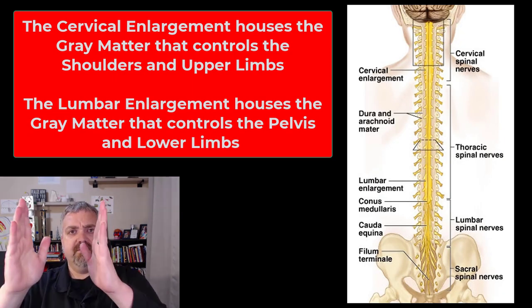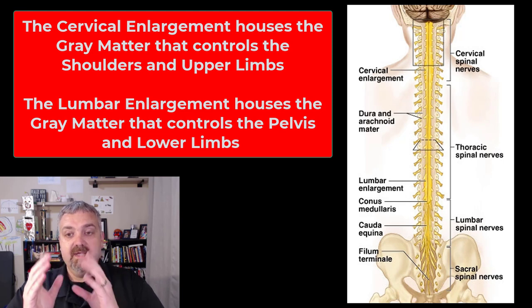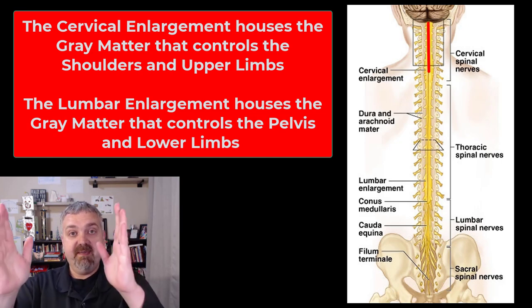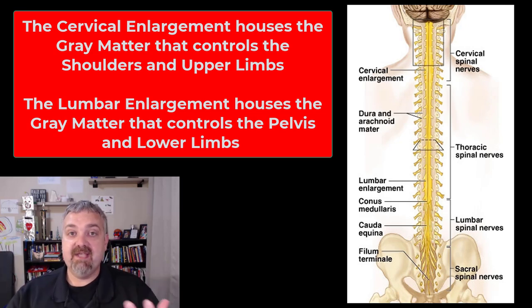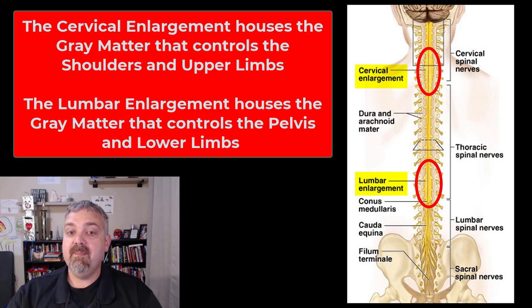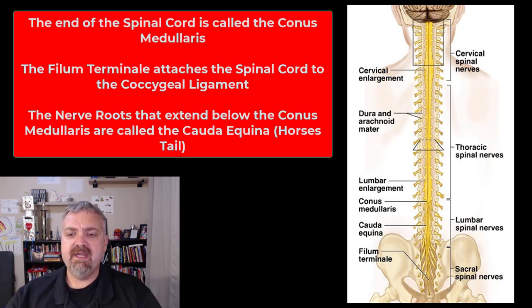When you look at the spinal cord, generally it starts big and then tapers down. That's because all the sensory information from the entire body has to travel to the top, while only the sensory information from the lower half has to travel to the bottom — same with motor commands. So generally the spinal cord is biggest at the top and gets smaller. But the amount of gray matter at any individual level depends on how many cell bodies are there and what area it's controlling. You will see two swellings: the cervical and lumbar enlargements. The cervical enlargement is where you have all the extra gray matter to control the upper extremities, shoulder, and upper limbs. The lumbar enlargement is there to control the pelvis and lower limbs.